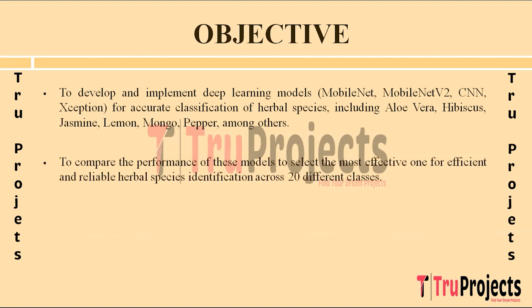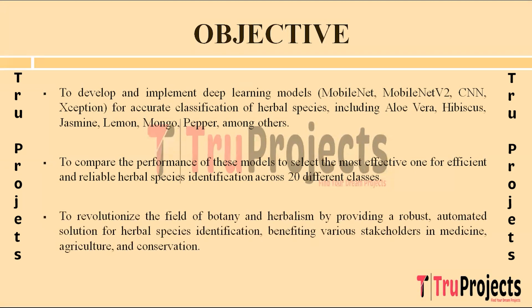Once trained, the models will be evaluated and compared based on performance metrics such as accuracy, precision, recall, and F1 score. This comparison aims to identify the model that achieves the highest accuracy and reliability in classifying the various herbal species across 20 different classes. By selecting the most effective deep learning model, the project aims to benefit sectors such as medicine, agriculture, and conservation, leading to improved quality assurance, better crop management, and enhanced biodiversity conservation efforts.